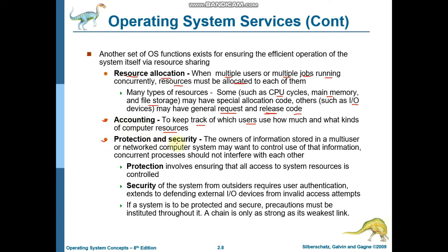Further, there is protection and security. Protection means that each user has specific rights and cannot utilize another person's rights. For example, admin rights are different from general user rights — a general user cannot use admin rights and vice versa. Every user's rights are protected. Security means protecting your computer system and devices from threats, such as preventing hackers from accessing your computer or stealing your important data. Protection and security are services provided by the operating system.